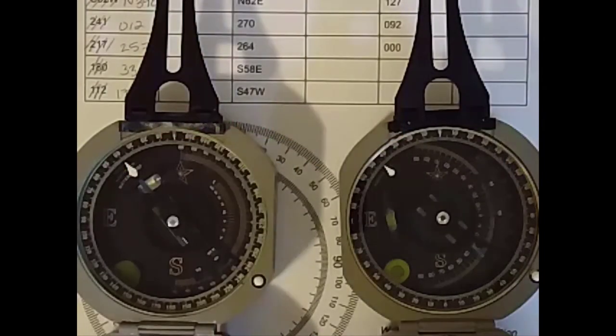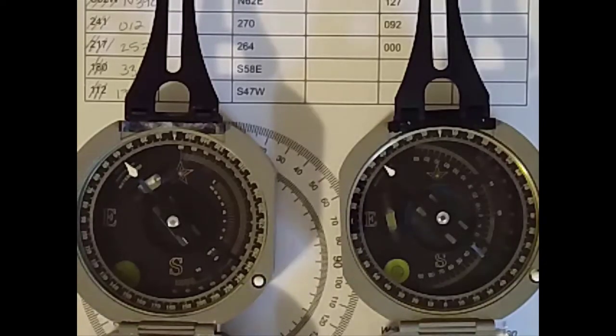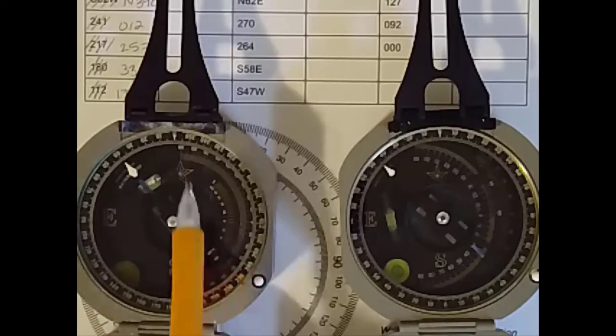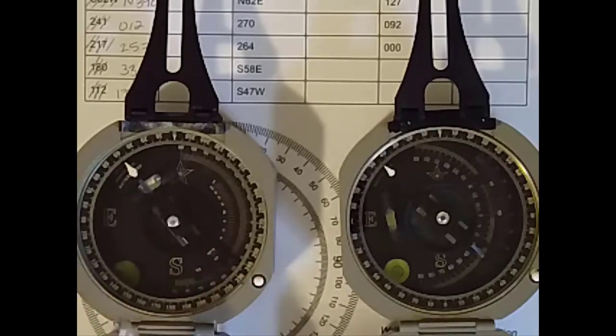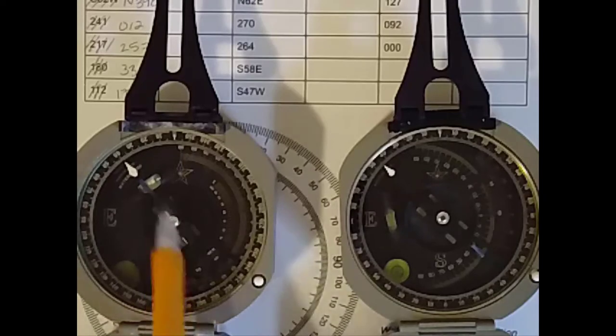So first we're going to take a look at these two Bruntons. They're in the same position. Both of them have east on the left, west on the right, north where the star is, and then south down below that.